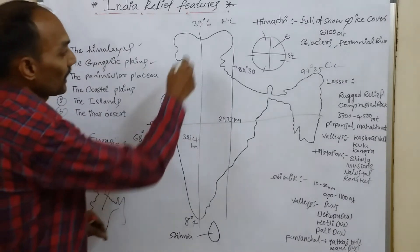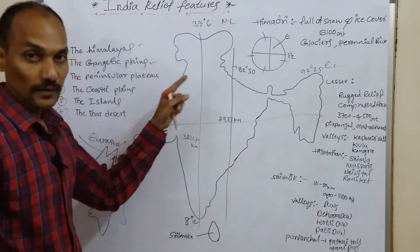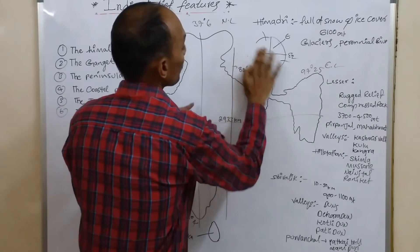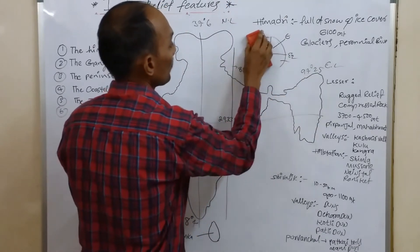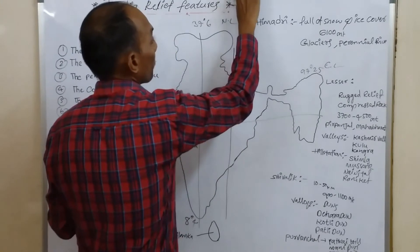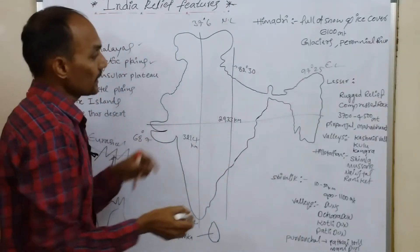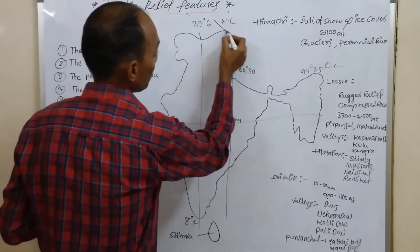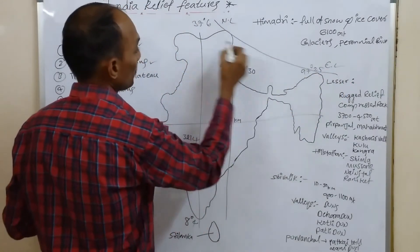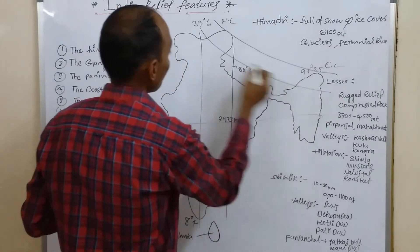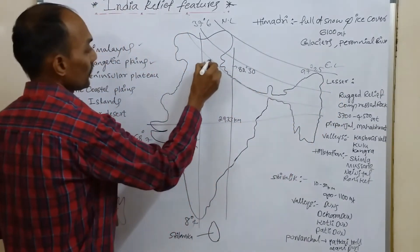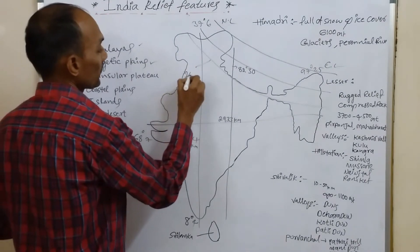These Himalayas are located on the northern border of India and they run from west to east like this. Himalayas run west to east like an arch.